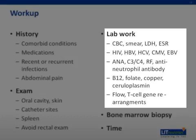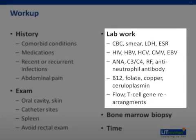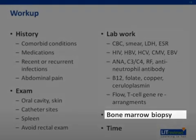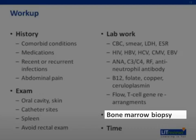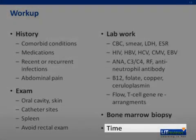Autoimmune workup such as ANA, C3, C4, rheumatoid factor, and antineutrophil antibodies can work up autoimmune etiologies. Caution should be taken in interpreting antineutrophil antibodies, as they have a high false negative rate. B12, folate, copper, and ceruloplasmin studies look for nutritional deficiencies. Flow cytometry, tests of T-cell gene rearrangements, and bone marrow biopsy can evaluate for malignancies such as LGL or MDS. It should be stressed that this laboratory workup is not a list of tests that should be ordered anytime someone is neutropenic, but a set of guidelines. For example, if a patient has arthralgias and other rheumatologic syndromes, ANA and complement would be appropriate, whereas someone with megaloblastic changes should have B12 and folate sent. Finally, a cause may not be readily apparent, and it is important to follow these patients over time.